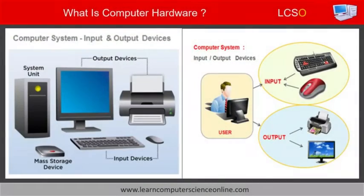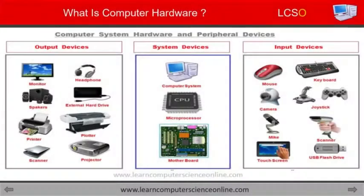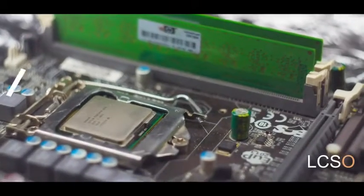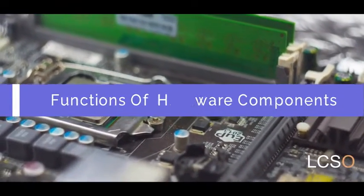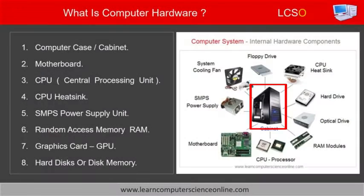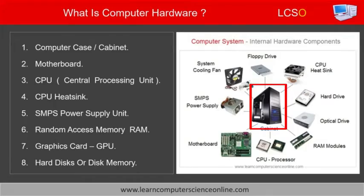Peripheral devices are also called input and output devices. The most commonly connected peripheral hardware devices include the computer display unit or monitor, keyboard, mouse, and printer. Let us now discuss the functions of each of the various computer hardware components in detail. Let us start with the first hardware component on our list, that is the computer case.